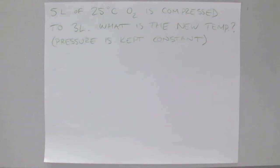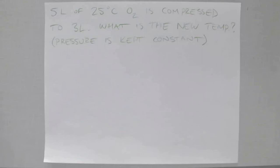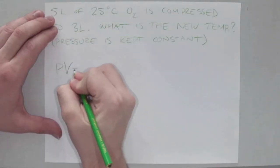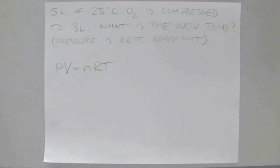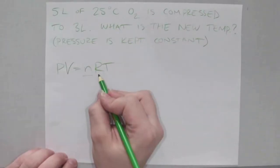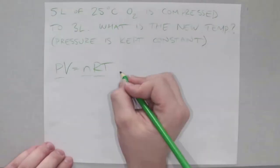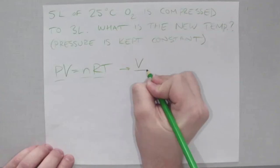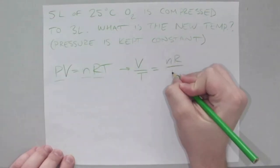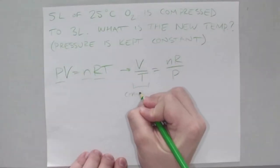How about changes in an existing process? Here we have 5 liters of oxygen at 25°C, compressed down to just 3 liters. The question is: what is the new temperature? Pressure is kept constant. The key for applying PIVNERT to these problems is writing the constant terms on one side of the equation. The things kept constant here are number of moles (closed system), R (always constant), and pressure. Rearranging gives V/T = nR/P, where V and T are changing and nR/P is constant.